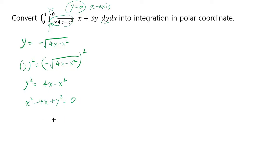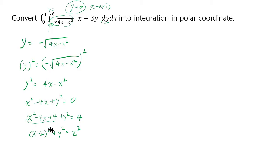Then you complete the square by adding 4. You take half of negative 4, which is negative 2, square that to get 4, and add 4 to both sides. This becomes a complete square: x minus 2 squared plus y squared equals 4, which is 2 squared. This is a circle centered at (2, 0) — no shifting in the y direction, just two steps to the right — with radius 2.